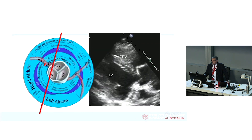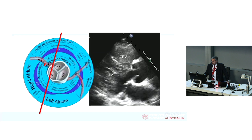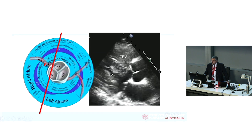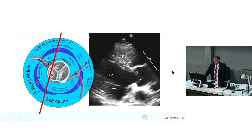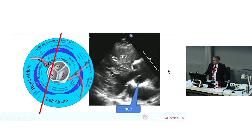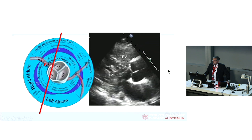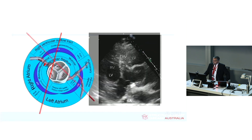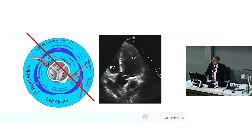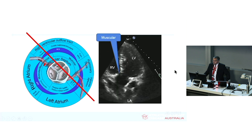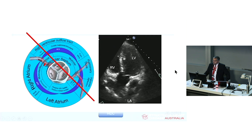Tilting towards more medial, you're bringing in a little bit of tricuspid. When you see tricuspid, you know you're more towards the medial, and you can see the membranous septum. You can understand how a VSD might impact upon that cusp. The five-chamber view is actually a cut through the right coronary and left coronary cusp — LCC and RCC — with the muscular septum visible.